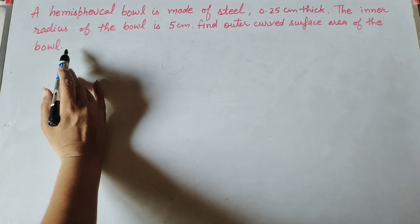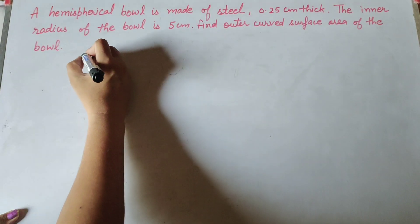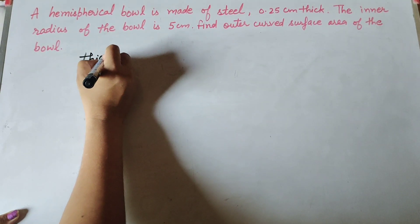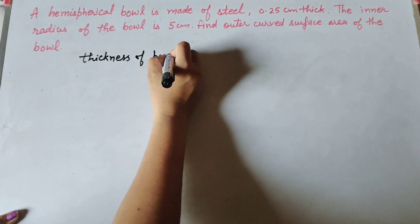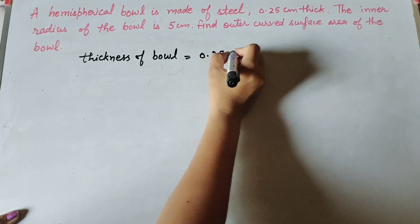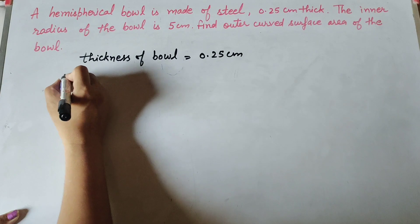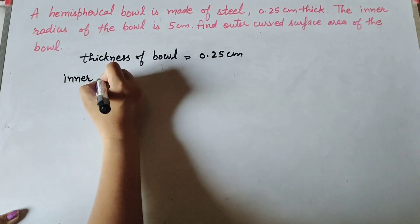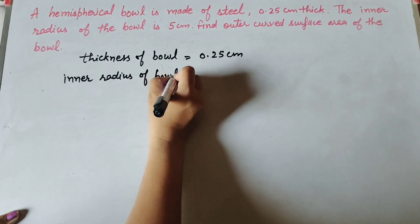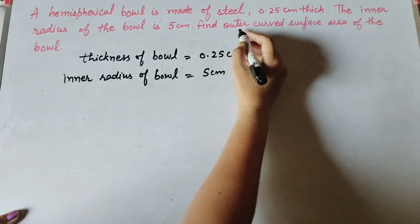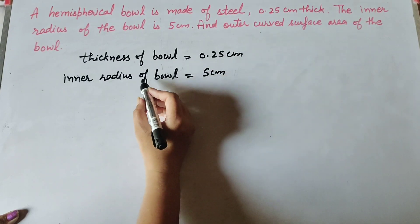In this question, the given values are: thickness of bowl is 0.25 centimeter, and inner radius of bowl is 5 centimeter. We need to find the outer curved surface area.